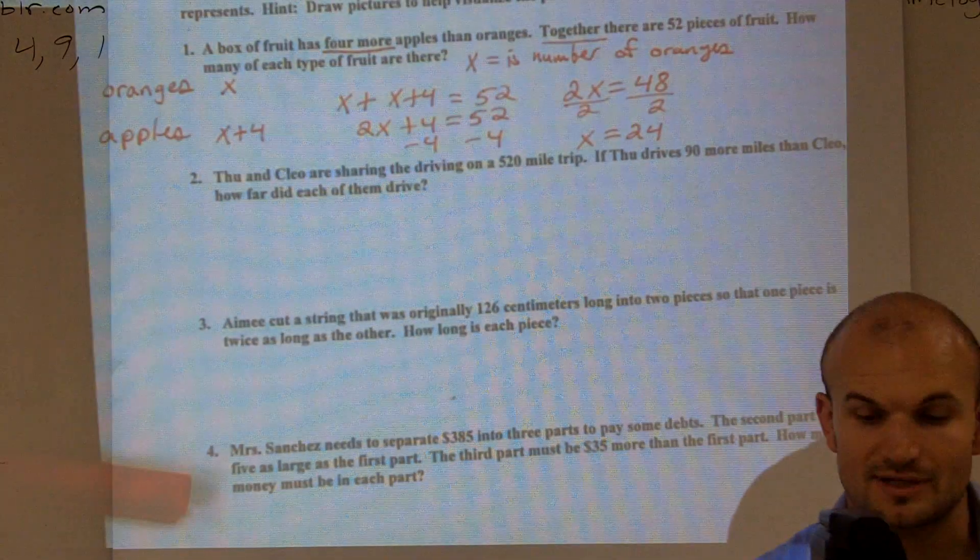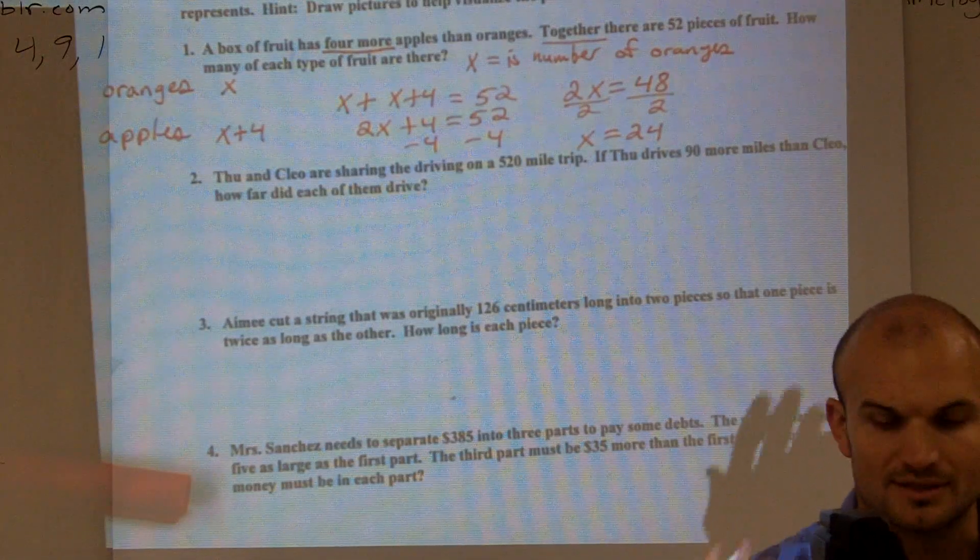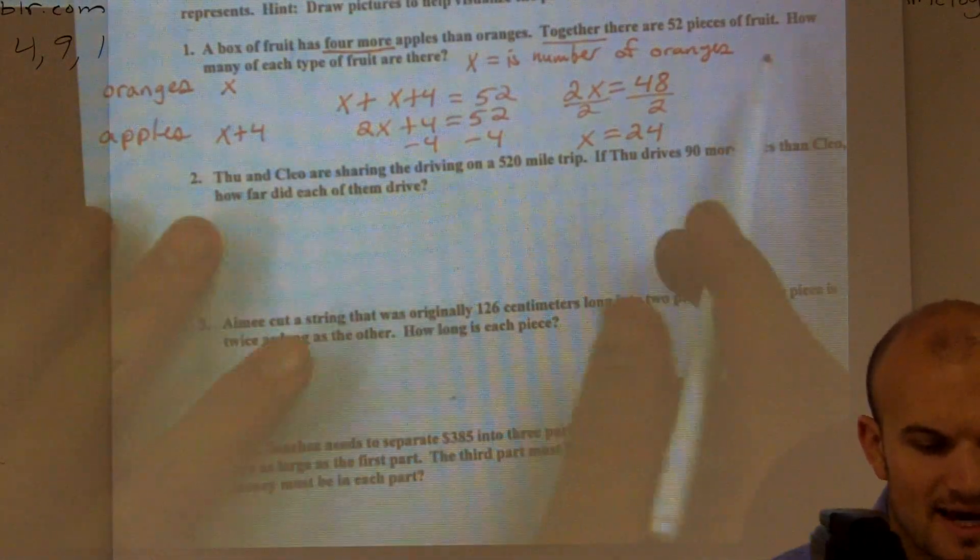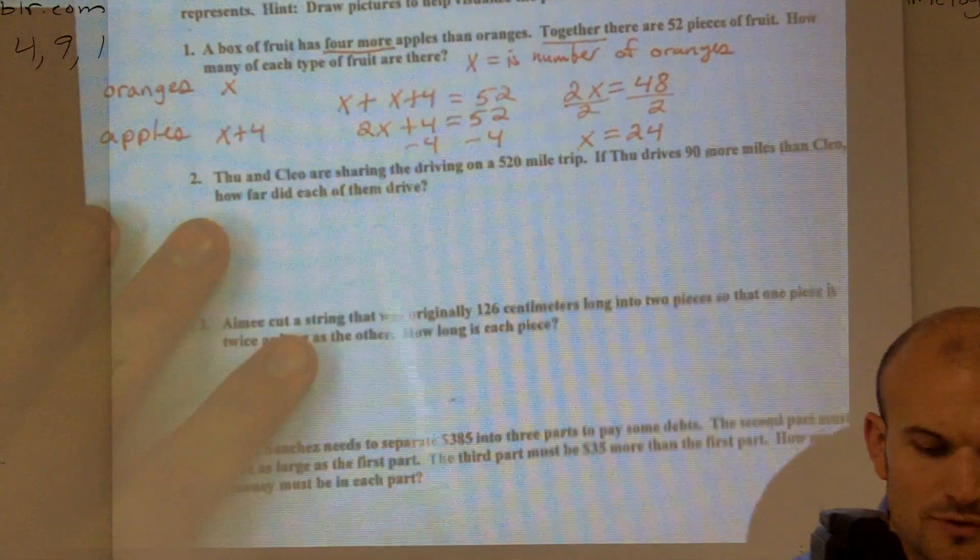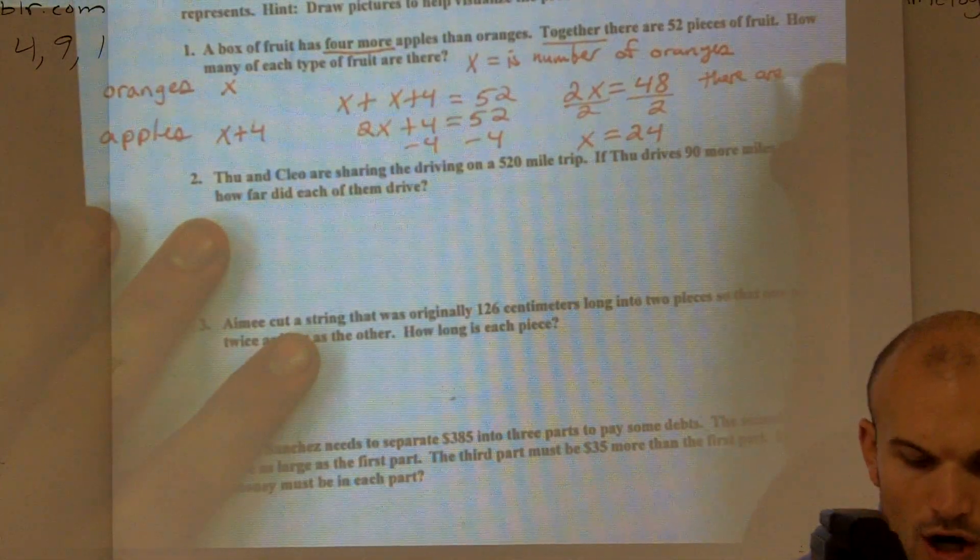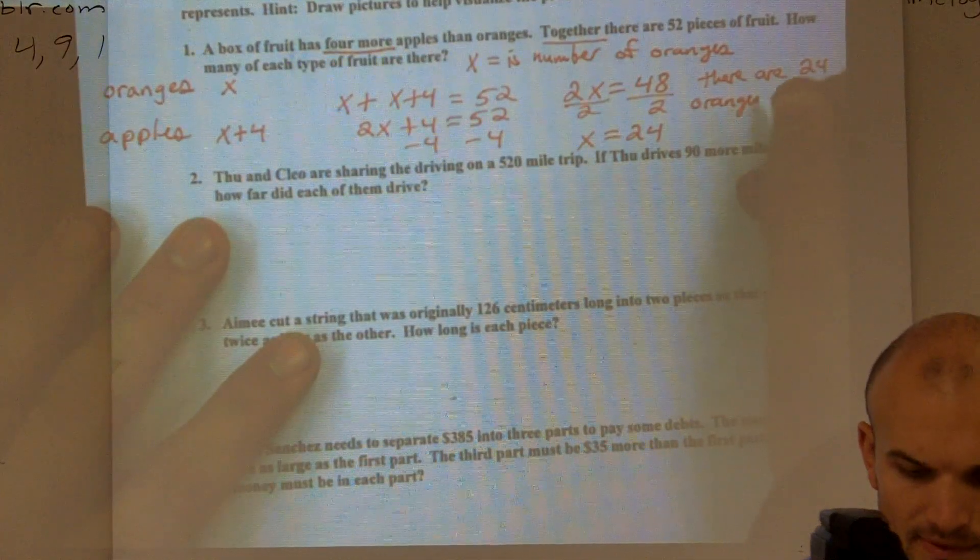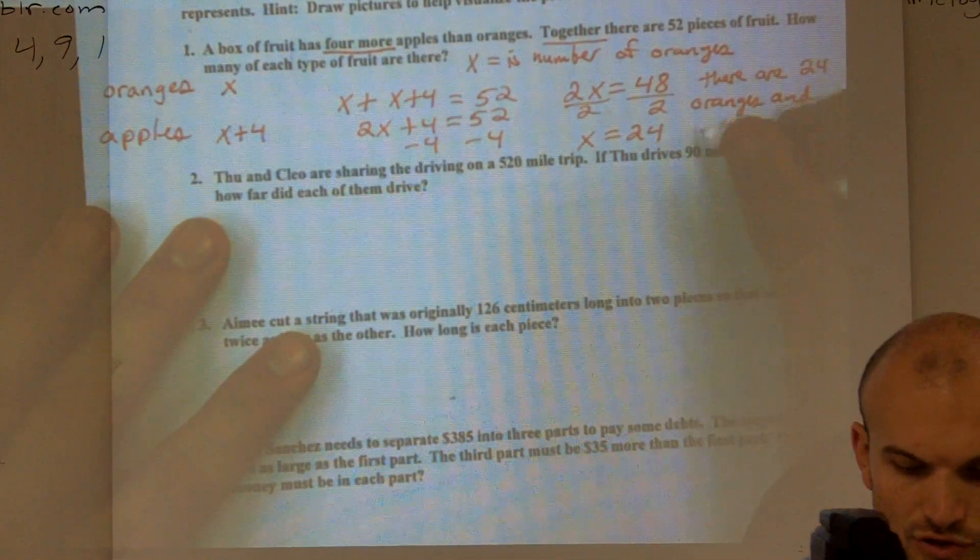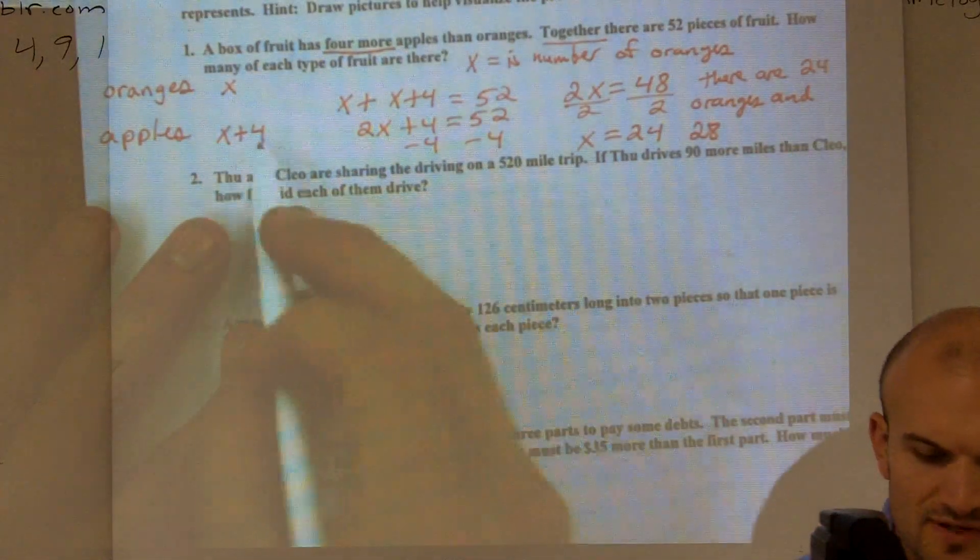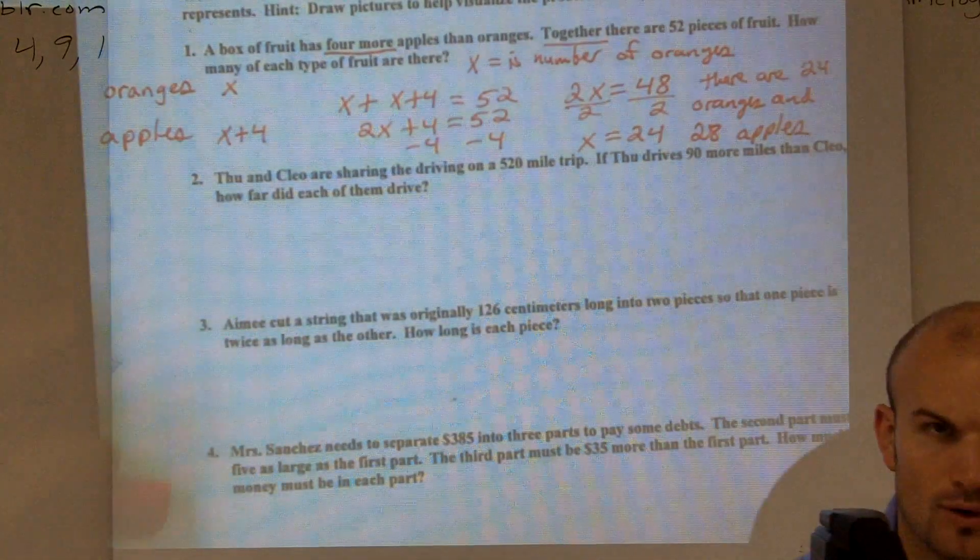Now that's not my answer. The answer did not ask for what is x. All right, so you have to read the problem and determine what are they asking. They say how many of each fruit are there. So you can say there are 24 oranges and 28, 24 plus four apples. And that's how you solve the word problem.